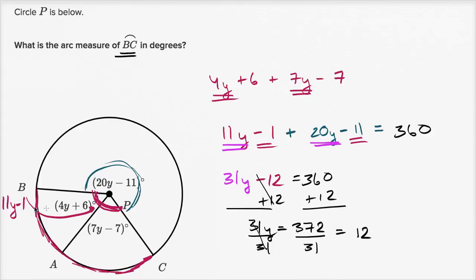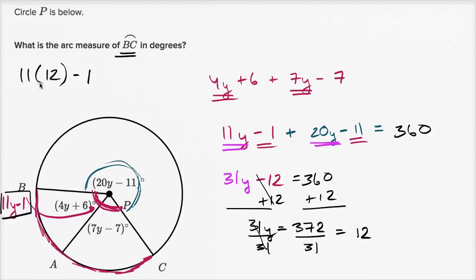Remember, we weren't solving for y — we need 11y minus 1. So 11 times 12 minus 1: 11 times 12 is 132, and 132 minus 1 is 131 degrees. So the measure of this central angle is 131 degrees, which is the measure of minor arc BC.